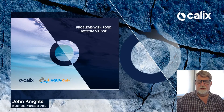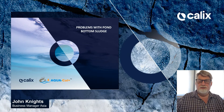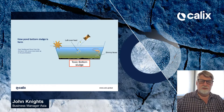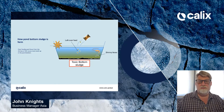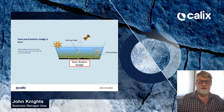Welcome back to our series of webinars on sustainable agriculture. In this case we're going to look at problems with pond bottom sludge. Pond bottom sludge is formed from a combination of leftover feed, which can often be 20% or more, and shrimp or fish feces. This builds up to a toxic sludge in the bottom of the pond, which can lead to numerous problems.